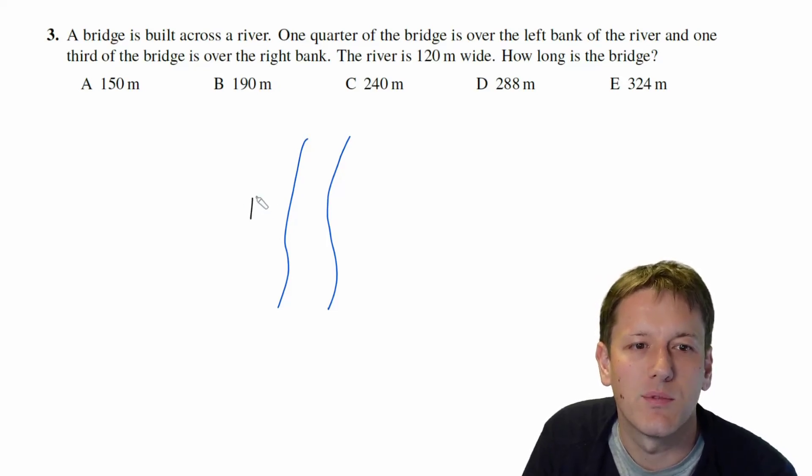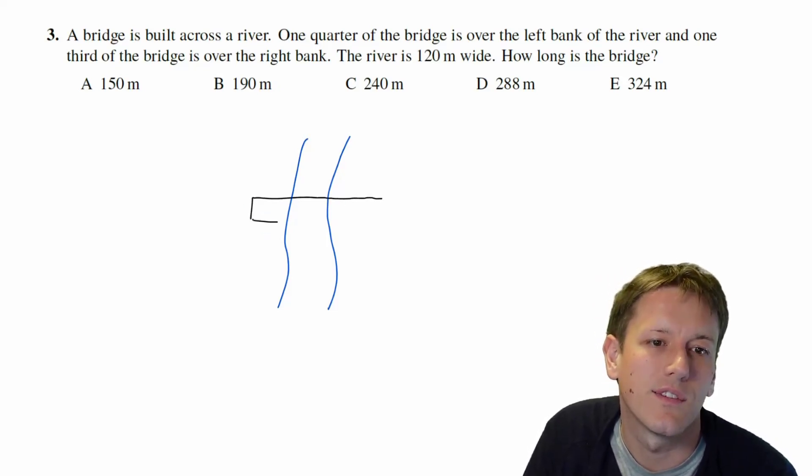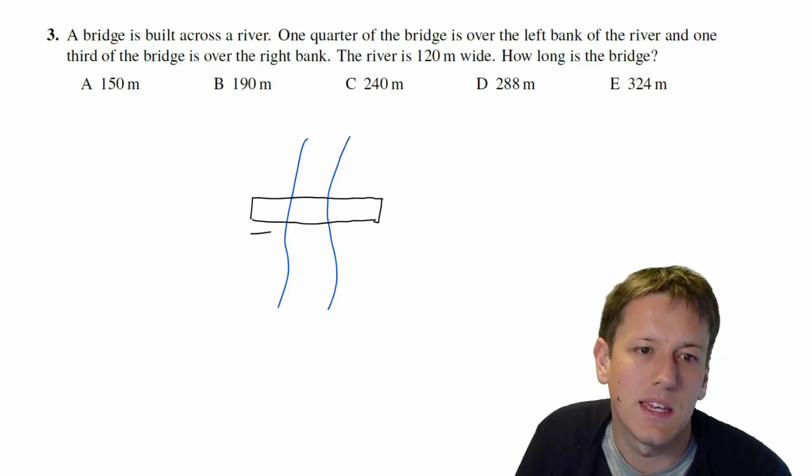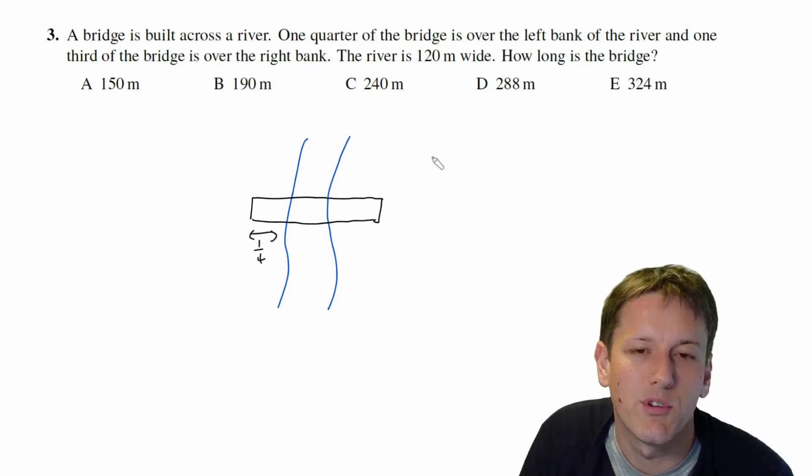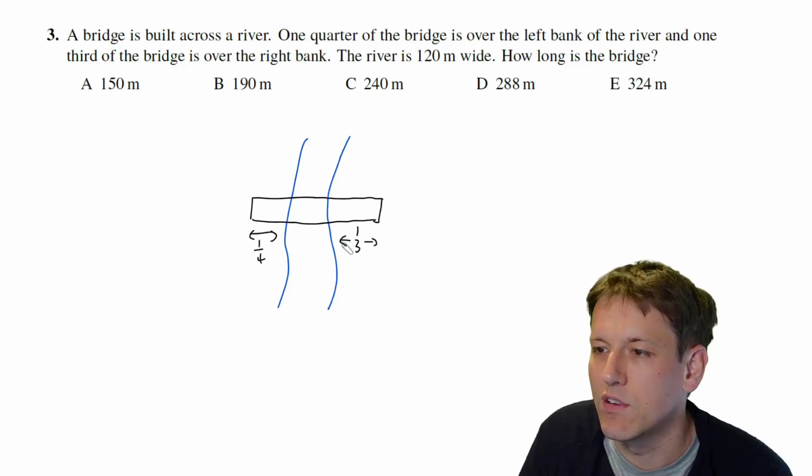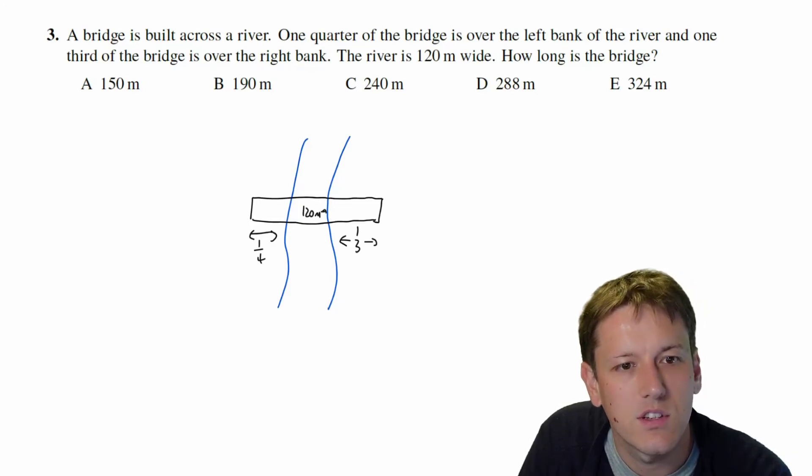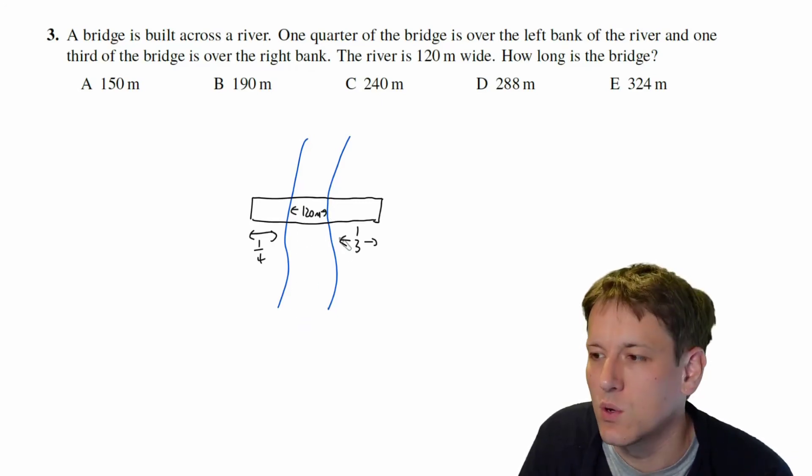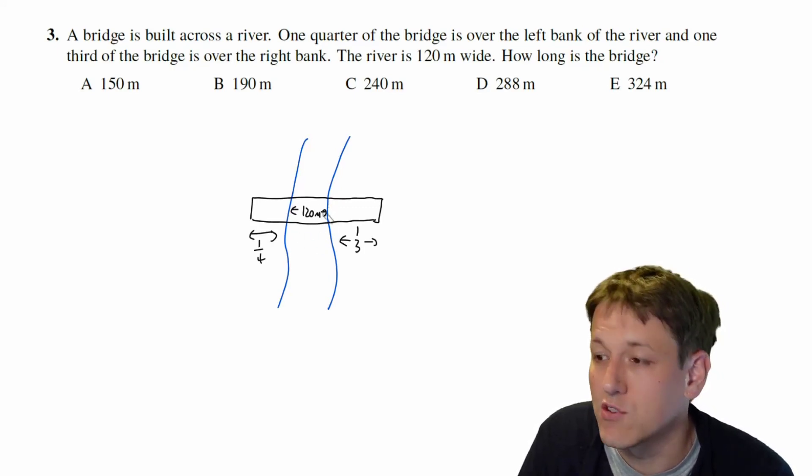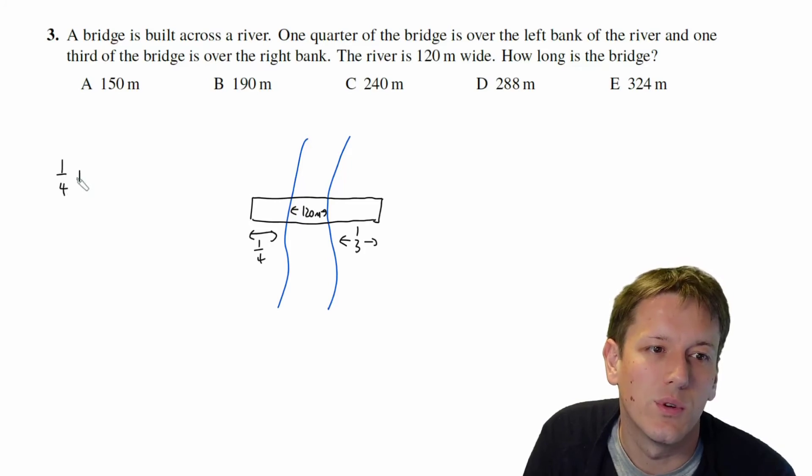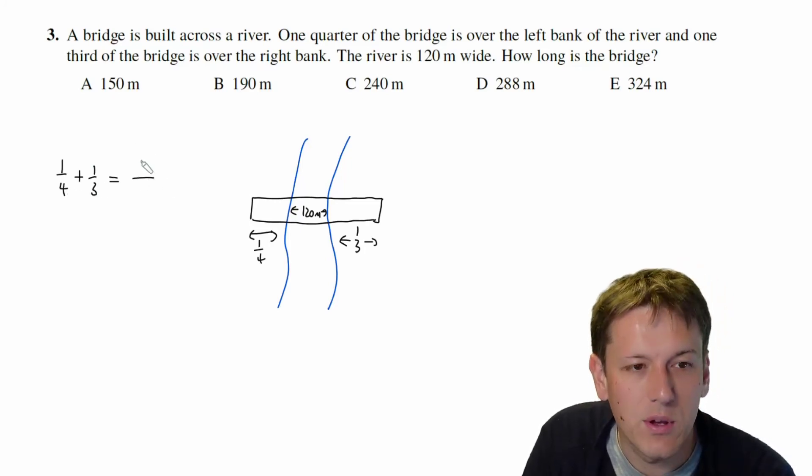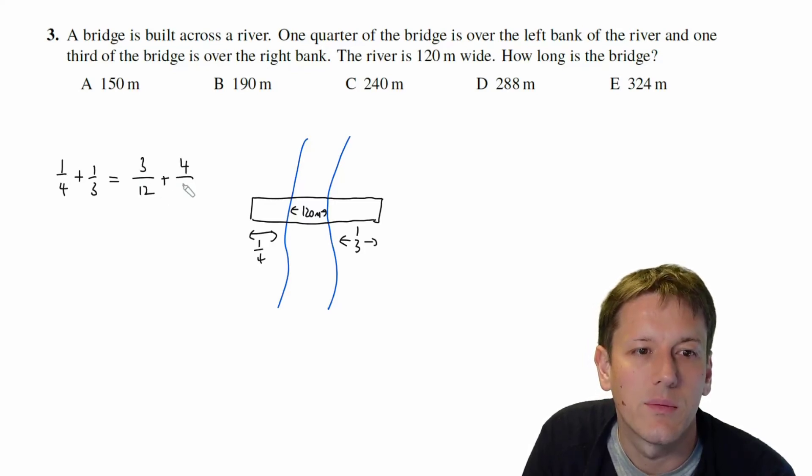So when it says one quarter of the bridge is over the left bank, that means that my bridge is going to look something like this over some point of the river, and this bit here is going to represent one quarter of the bridge. A third of it's going to be over the right hand bank of the river, and the river itself is 120 meters wide at least at the point where the bridge is here, so that'll be 120 meters. So all we need to do is work out what fraction of the bridge the 120 meters would be. So we can do one quarter plus one third. If we write those both in twelfths, we get three twelfths plus four twelfths, so that must be seven twelfths.